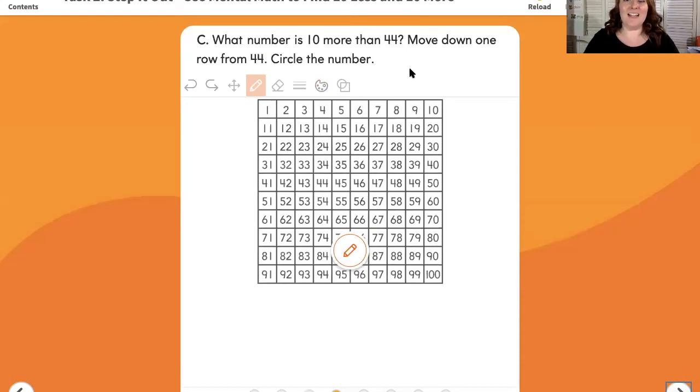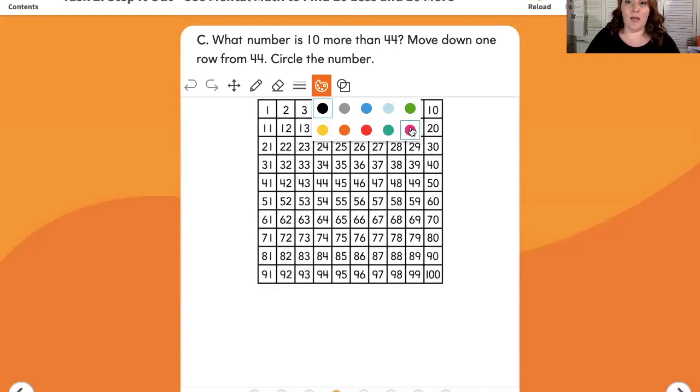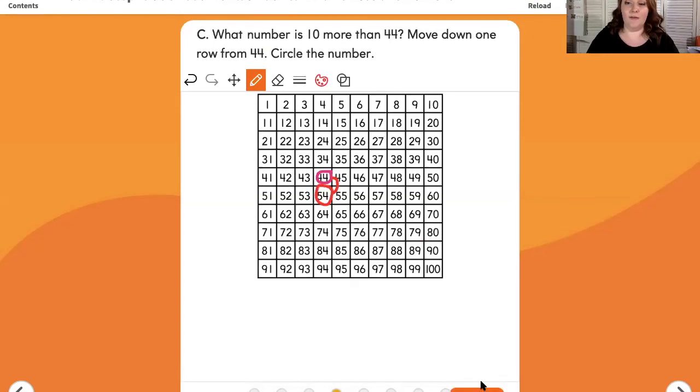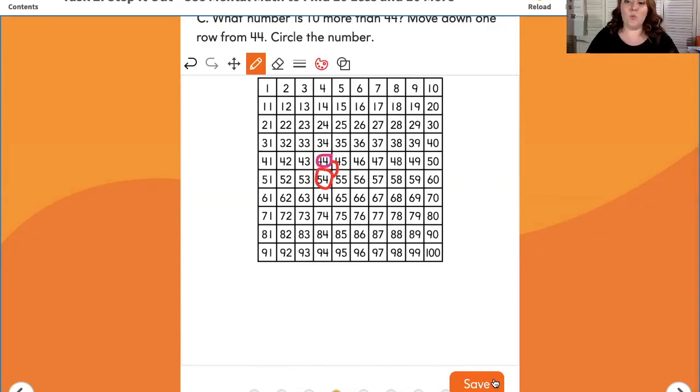What number is 10 more than 44? Move down one row from 44 and circle the number. So let's go ahead and circle 44 again. And this time I'm going to move one row down. So if I jump down one row, my answer would be 54. 54 has one more group of 10 than 44.